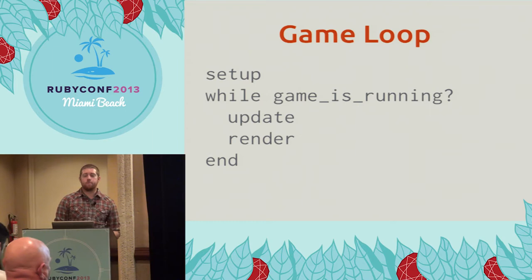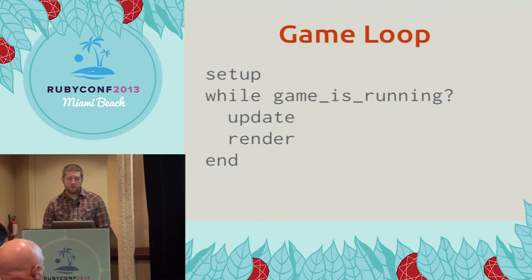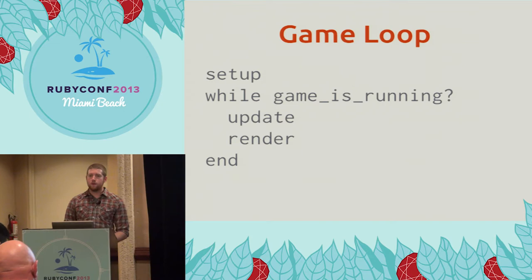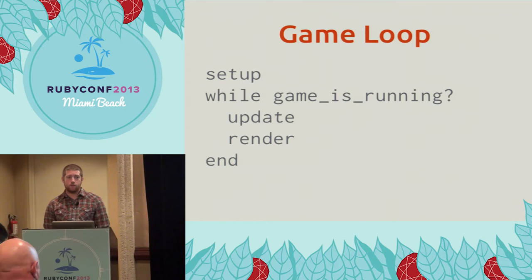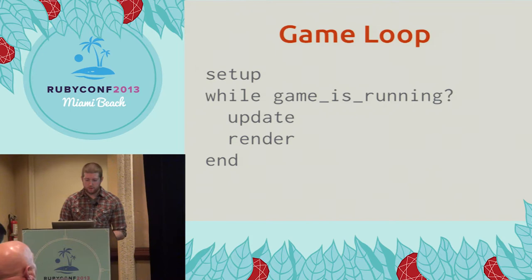So at a very high level, almost every game has what's called the game loop at its core. The game does a little bit of initialization at the beginning just to get the state of the game set up. And then as long as the game is running, it repeatedly updates the state of the game world based on player input or timing. And then it takes this state and renders it out onto the screen so that your human player can see it.